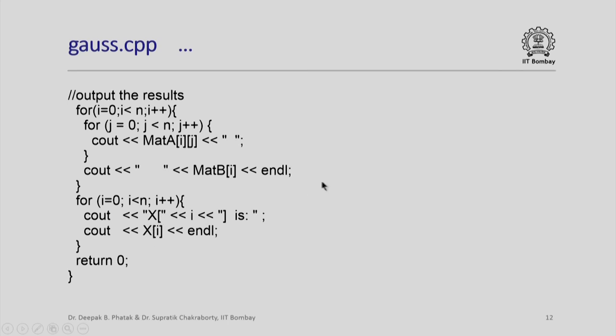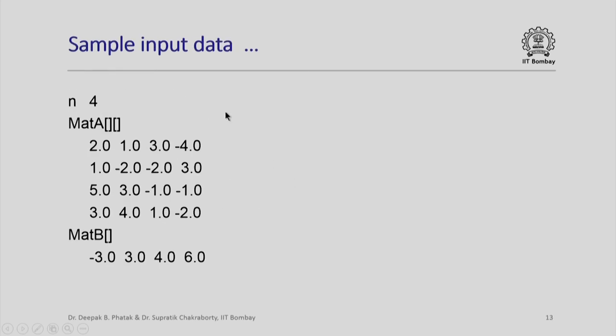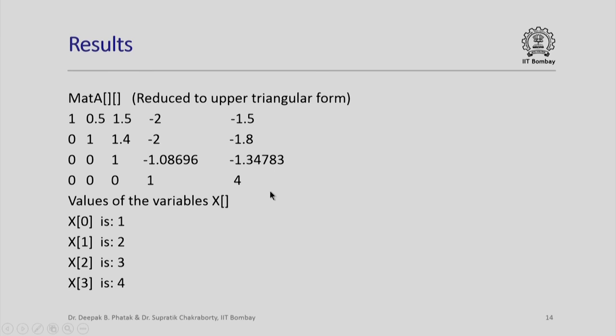Here are sample input and output results for your benefit. We have run this program with n equal to 4. The matrix A having these values and matrix B having these values. You can simply input these values one after another starting with 4, then this row, then this row and so on. When you do that, when the program is executed, you will actually get these results. First, the matrix A will be printed which is reduced to upper triangular form. It will be printed something like this and then values of the variables of x will be printed as 1, 2, 3, 4.